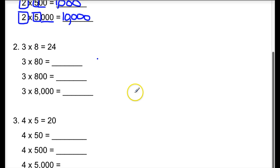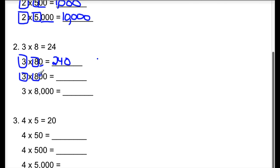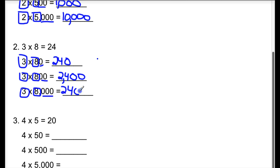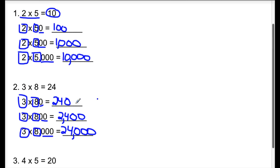Three times eight is 24, so we're looking at our basic fact of three times eight. That gives us 24. With one zero, the product is 240. Three times eight again is 24, with two zeros this time, so our product is 2,400. Then three times 8,000: three times eight is 24, and this time we have three zeros, giving us a product of 24,000.